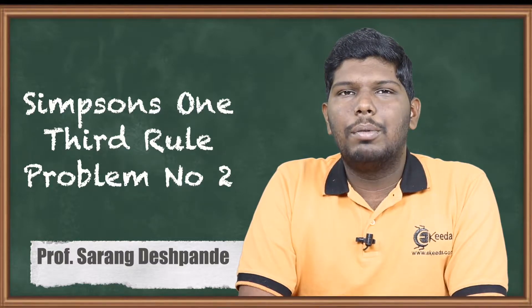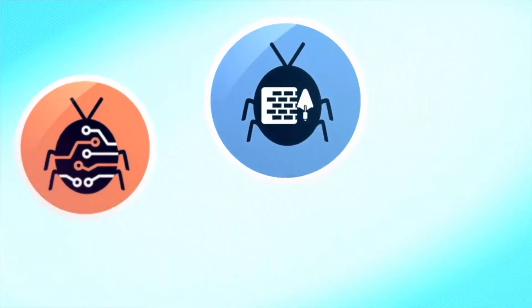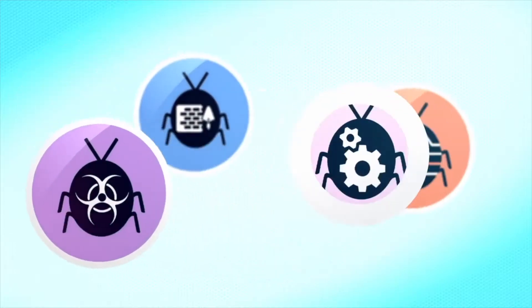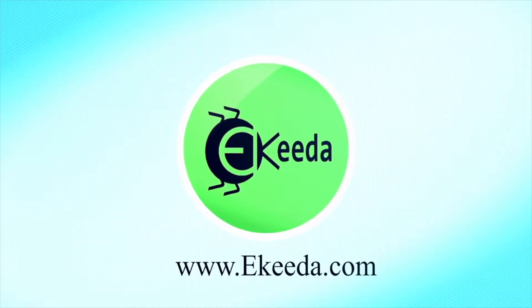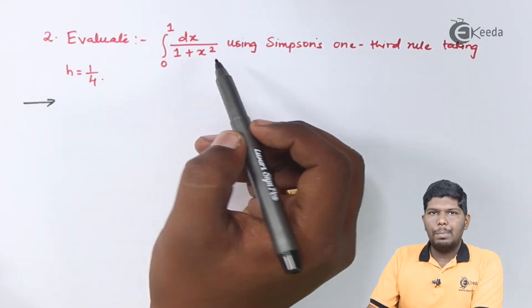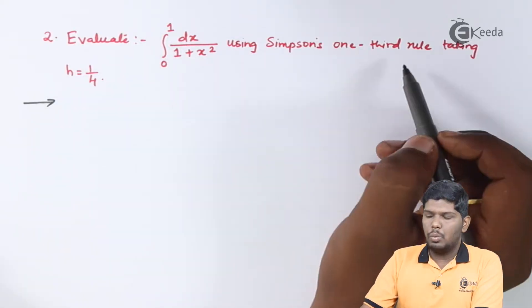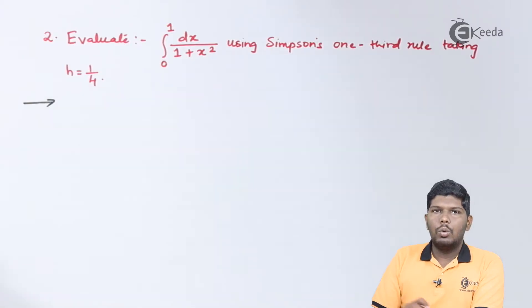Let us start with problem number 2. Evaluate integral 0 to 1 dx upon 1 plus x square using Simpson's one-third rule taking h is equal to 1 by 4.